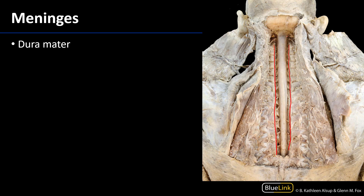Here we can see the outside of the dural sheath. The dura mater — dura meaning tough and mater meaning mother — is the exteriormost meninge or covering of the central nervous system. The spinal meninges are contiguous with the cranial meninges, and there are some differences between the cranial dura and the spinal dura, but we'll see those in a later session.